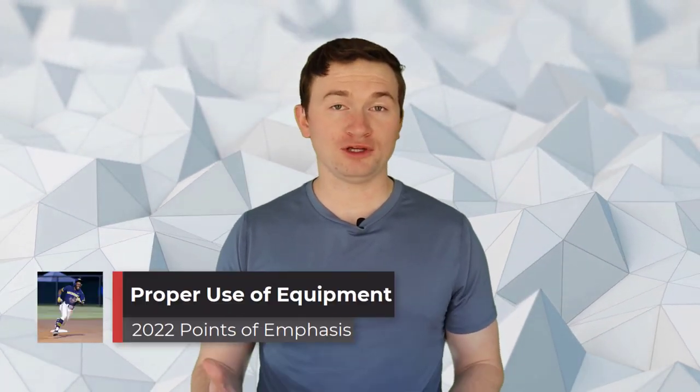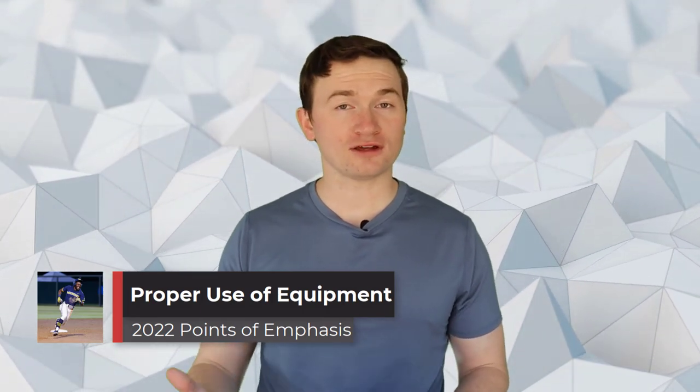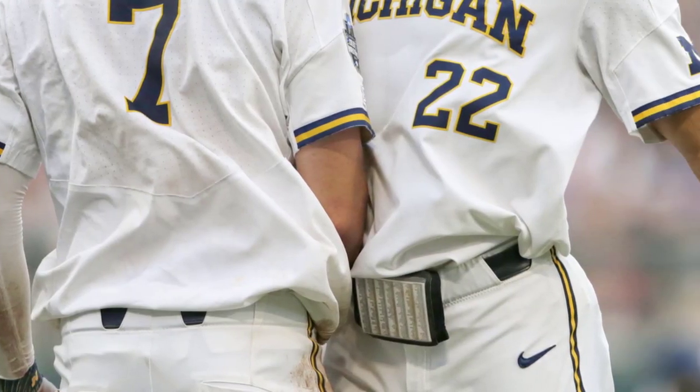The next point of emphasis is proper use of equipment. Equipment is designed by manufacturers and sold to consumers for a specific purpose. The NFHS and state associations want to remove the risk of injury to players from improper use of equipment. While this obviously includes actions like altering a bat, a big point of emphasis here in Georgia is wristbands being worn around the belt. You see this often with play calling for teams, but because the band is designed to go on the wrist and not on the belt, this is not legal for playing action. This is an improper use of equipment and needs to be addressed immediately.